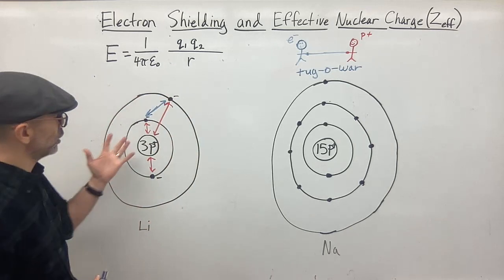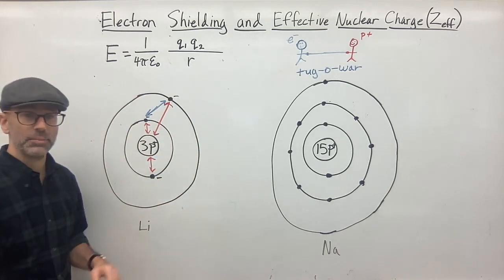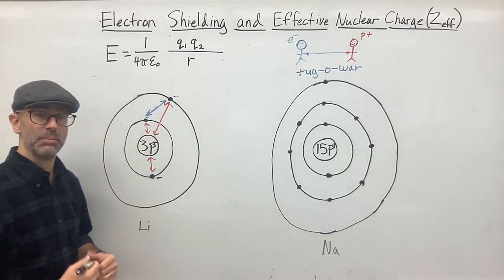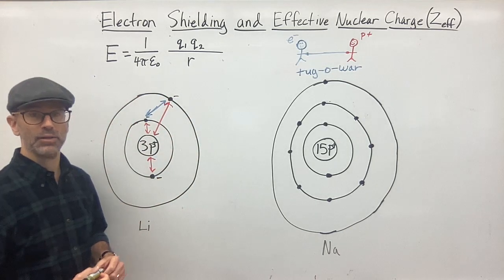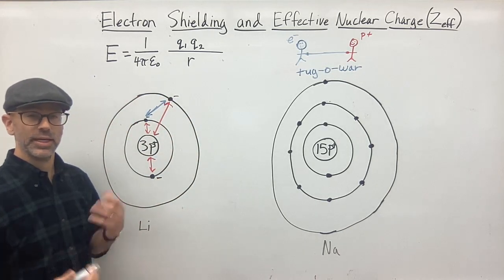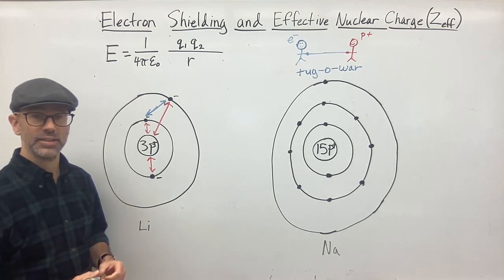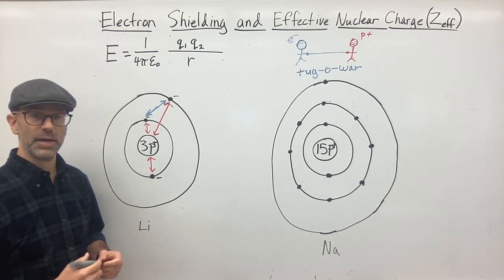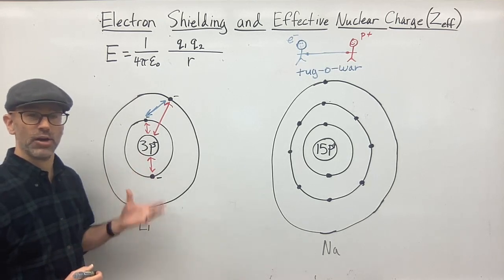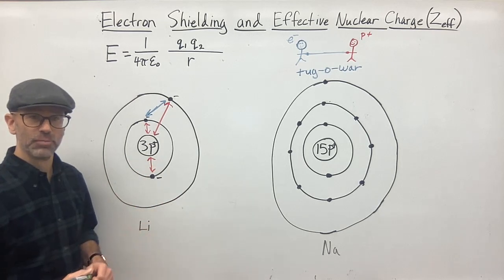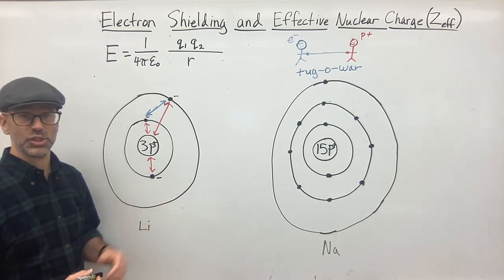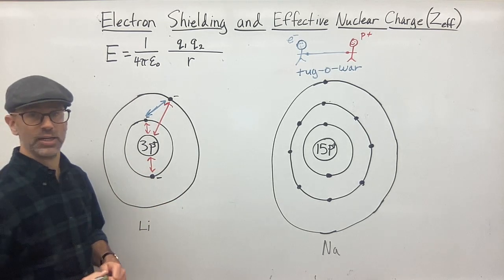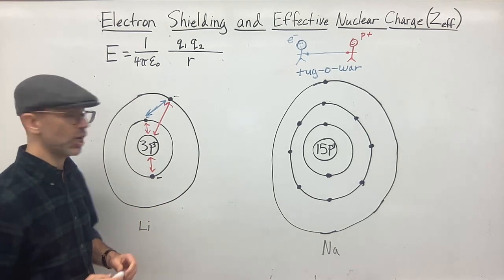So let's go back to our picture of the Bohr atom here. It's not the perfect or exact model of the atom, but it does help us explain a few things. I'll be talking about where it kind of falls apart with respect to shielding and effective nuclear charge.